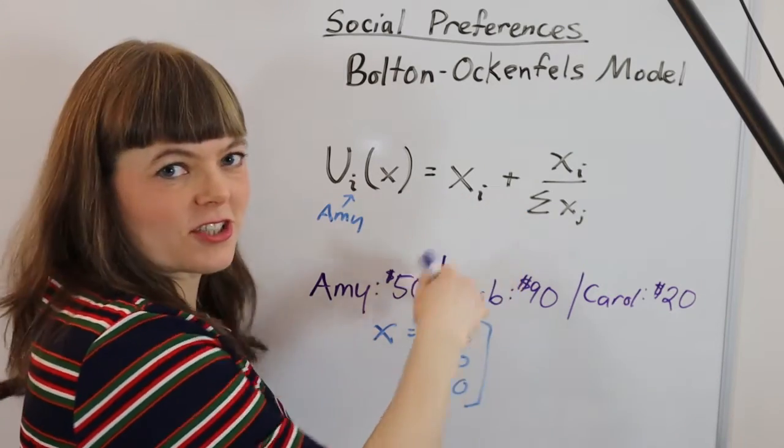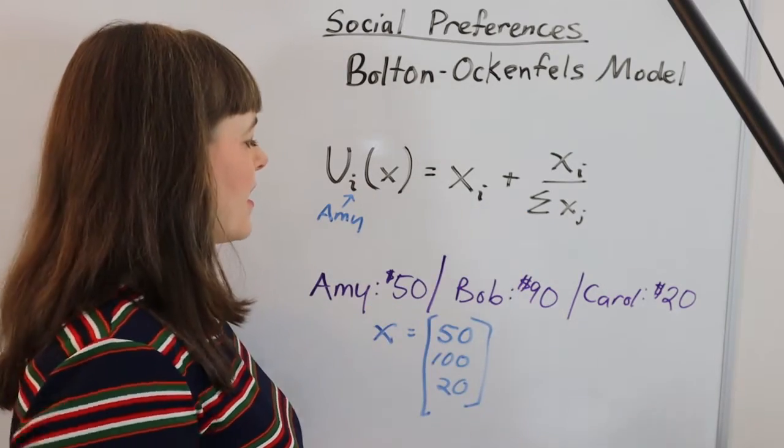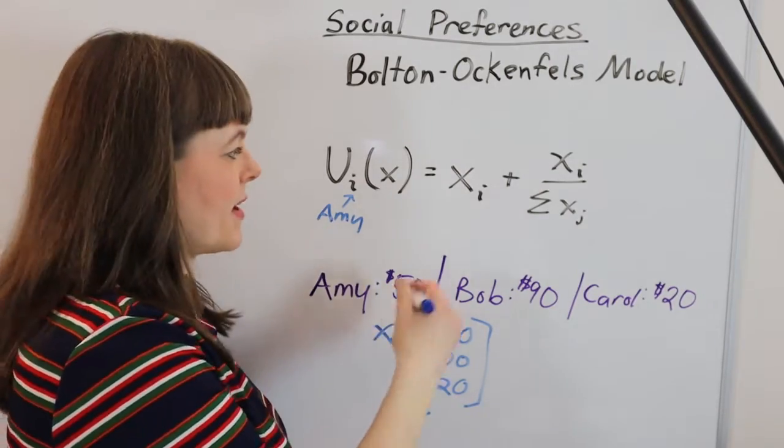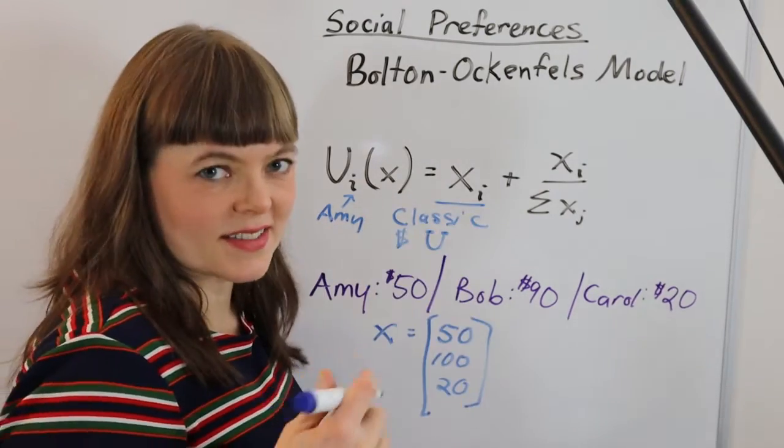The first term here is just classic consumption utility. It's Amy's utility for her own amount of money. In this case that's $50.